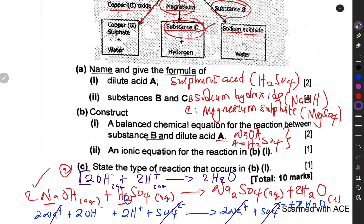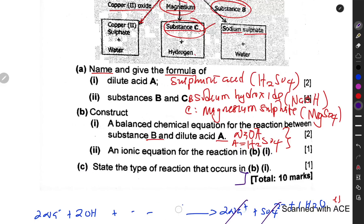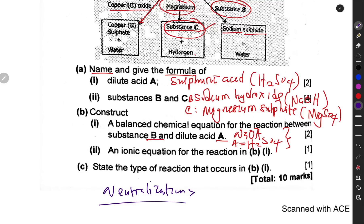There is a video on this platform on how to write chemical equations, balance them, and understand valences — you should check it out. The last question asks you to state the type of reaction that occurs. The type of reaction is called a neutralization reaction, because an acid and a base neutralize each other, producing neutral products — salt and water.